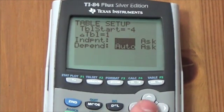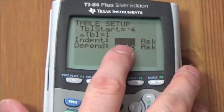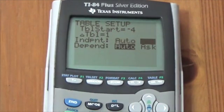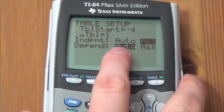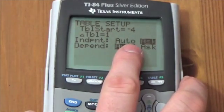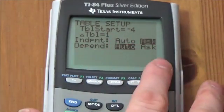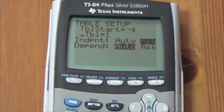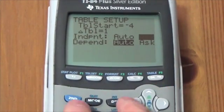I'm going to go down here, and I'm going to change the independent from auto to ask. Now, what that's going to do here is it's going to set the calculator up so that it no longer automatically calculates, like goes from x values to y values. It's actually going to wait and let you determine what the x values are.